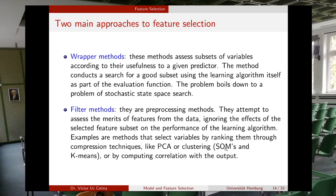Examples of filter methods are methods that select variables by ranking them through compression techniques like PCA, or clustering like self-organizing maps or k-means, or by computing correlation with the outputs. In these methods you don't use your regression or classification algorithm at all — instead, given a set of features, you try to identify which features are more related to the final label of your examples. You define a function that assigns a score to each feature, and then you simply select those features with the better score.